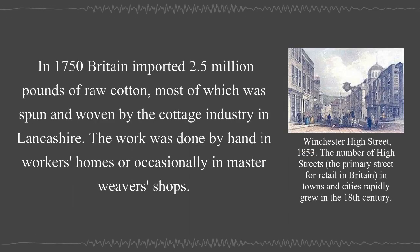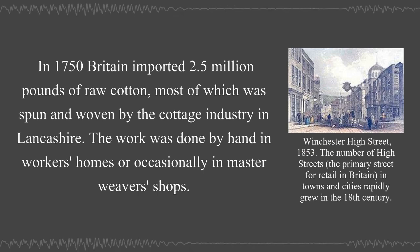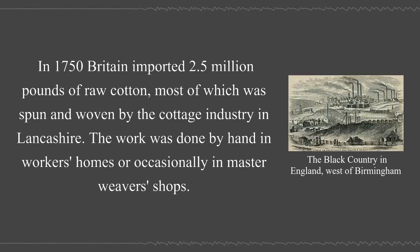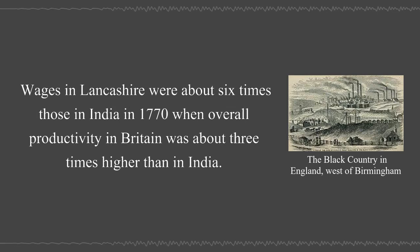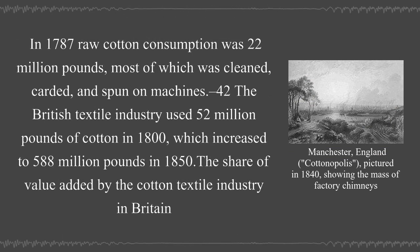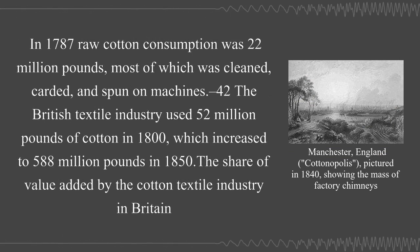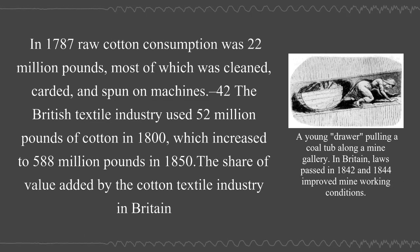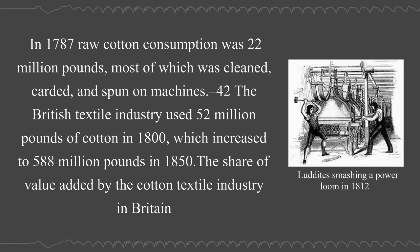In 1750, Britain imported 2.5 million pounds of raw cotton, most of which was spun and woven by the cottage industry in Lancashire. Wages in Lancashire were about six times those in India in 1770, when overall productivity in Britain was about three times higher than in India. By 1787, raw cotton consumption was 22 million pounds, most of which was cleaned, carded, and spun on machines. The British textile industry used 52 million pounds of cotton in 1800, which increased to 588 million pounds in 1850.